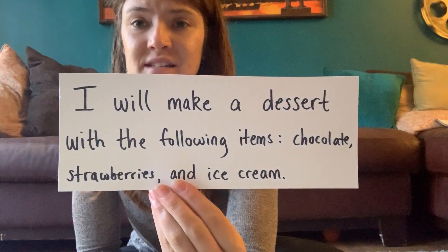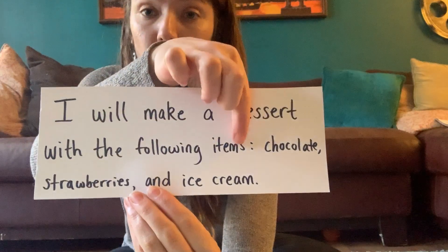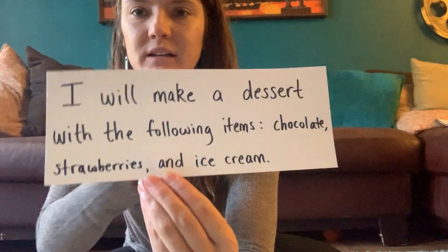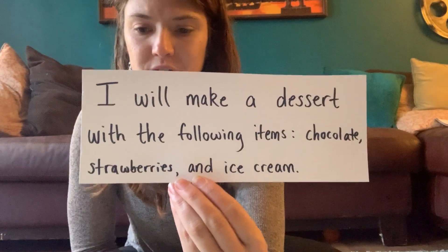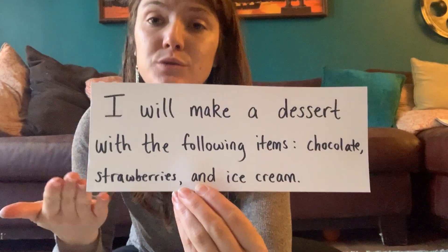We can also use a colon to introduce a list of items. For example, we could say: 'I will make a dessert with the following items: chocolate, strawberries, and ice cream.' In this case, the colon is introducing a list of items.